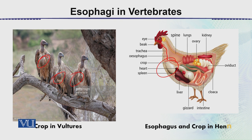The food from the crop moves into the gizzard. The gizzard — known as 'pota' in Urdu — is a muscular organ where food is crushed. The partly broken food then moves into the intestine for further processing. This is all about the esophagi in vertebrates.